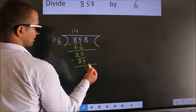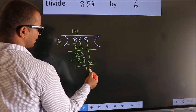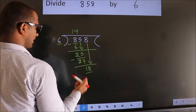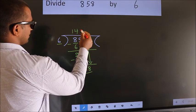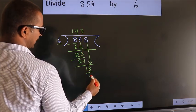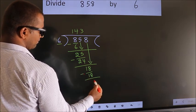After this, bring down the beside number. So, 8 down. 18. When do we get 18? In 6 table, 6 threes, 18. Now we subtract. We get 0.